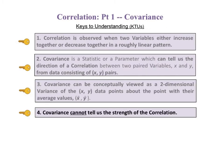The fourth key says covariance cannot tell us the strength of the correlation.